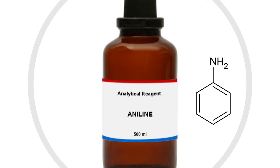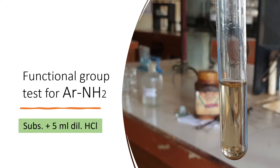For testing I am taking aniline. The structure of aniline is shown — as you can see it contains the functional group NH₂, meaning it is a primary amine. We take the substance to be tested in a dry test tube. I have taken aniline and added around 5 ml of HCl. The substance dissolves in HCl as it is basic in nature.